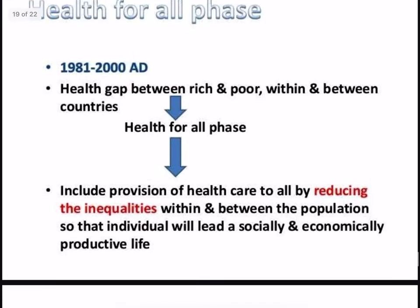The health for all phase ran from 1981 to 2000. The health gap between the rich and the poor, within and between countries, was minimized. This phase included provisions of health care to all by reducing inequalities within and between populations, so that individuals could lead a socially and economically productive life.